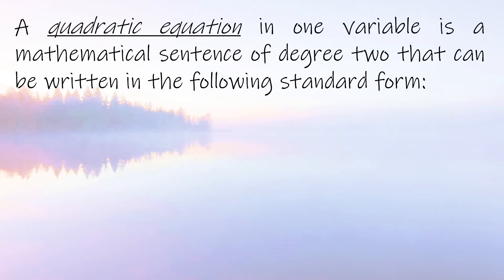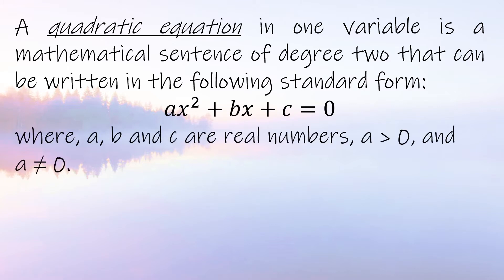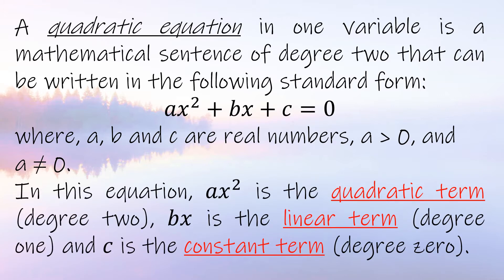Let us recall the definition of a quadratic equation. A quadratic equation in one variable is a mathematical sentence of degree two that can be written in standard form: ax² + bx + c = 0, where a, b, and c are real numbers, and a must not be equal to zero. In this equation, ax² is the quadratic term.